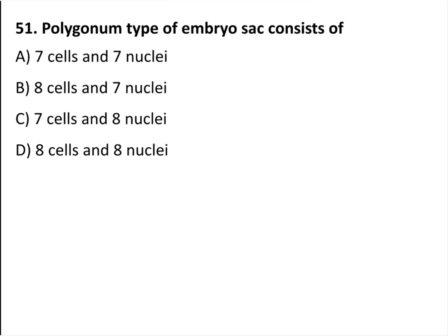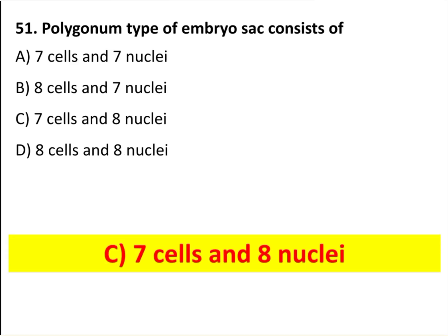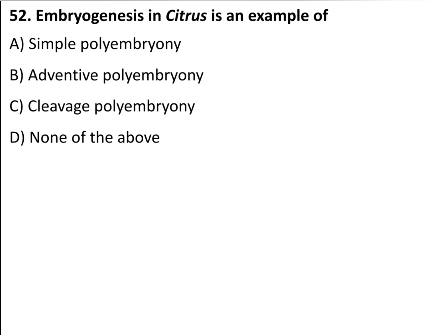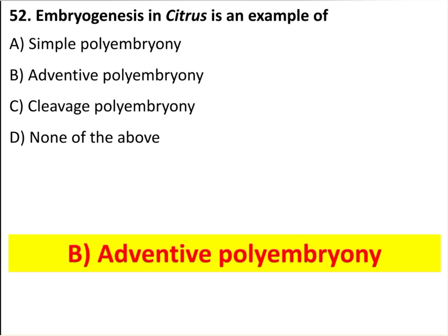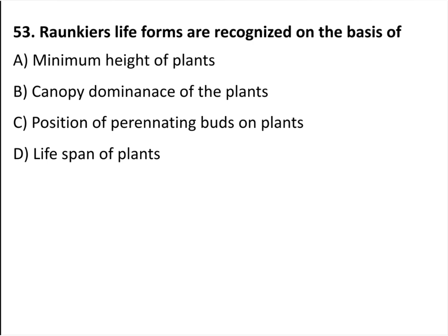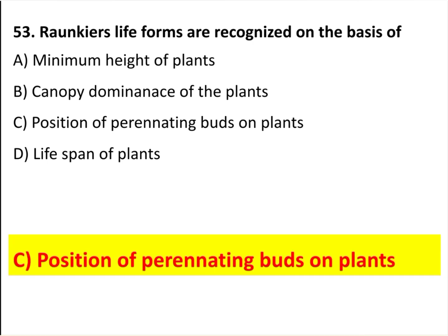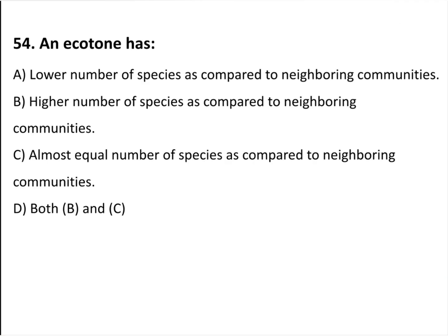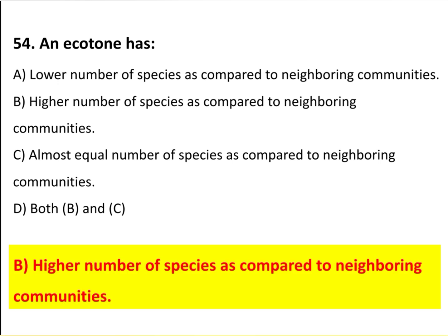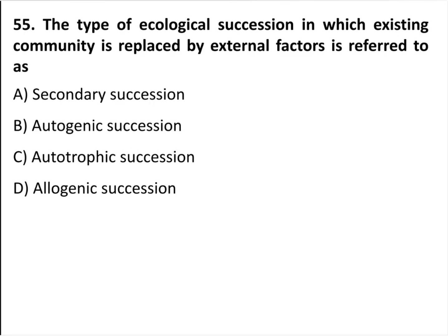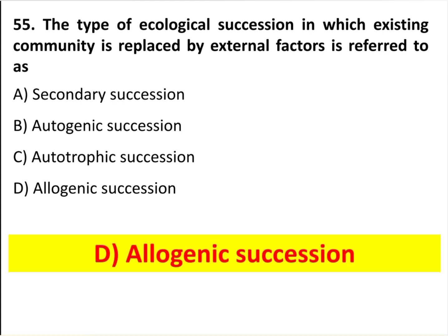Polygonum type of embryo sac consists of 7 cells and 8 nuclei. Embryogenesis in Citrus is an example of adventive polyembryony. Raunkiaer life forms are recognized on the basis of position of perennating buds on plants. An ecotone has a higher number of species as compared to neighboring communities. The type of ecological succession in which the existing community is replaced by external factors is referred to as allogenic succession.